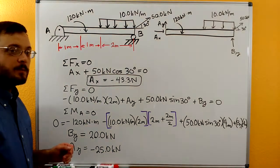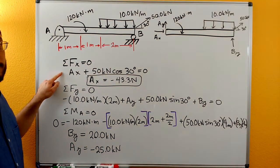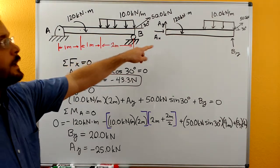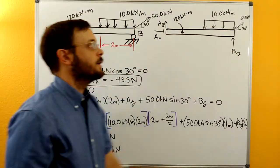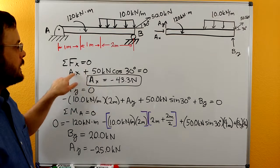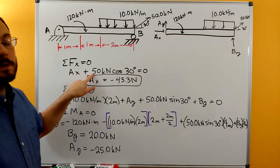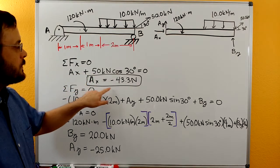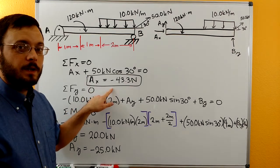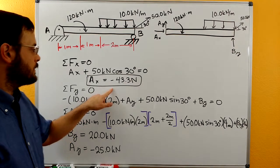Now we can do our sum of forces. So we do our sum of forces in the x. All we have is AX and then the x component of the 50 kilonewton force. So AX plus 50 kilonewtons cosine of 30. Solving for this, we get AX is equal to negative 43.3 kilonewtons.